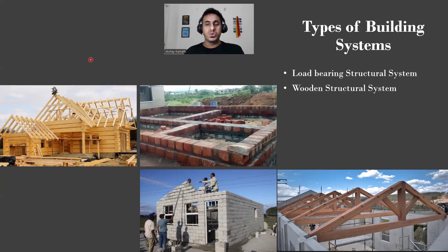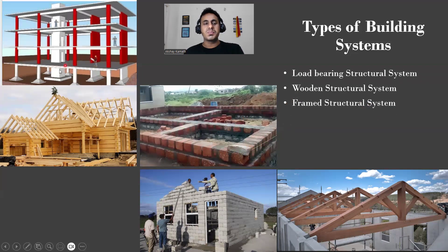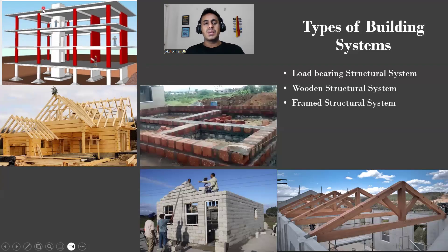The framed structural system is what we use nowadays for most buildings. Here you have a footing, then a column, then a plinth beam, then a slab — and in this way you can raise a basement, ground floor, first floor, second floor, third floor, and so on. The load transfer happens from slab to beam, beam to column, column to footing, and footing to soil. This load path is the frame structure.